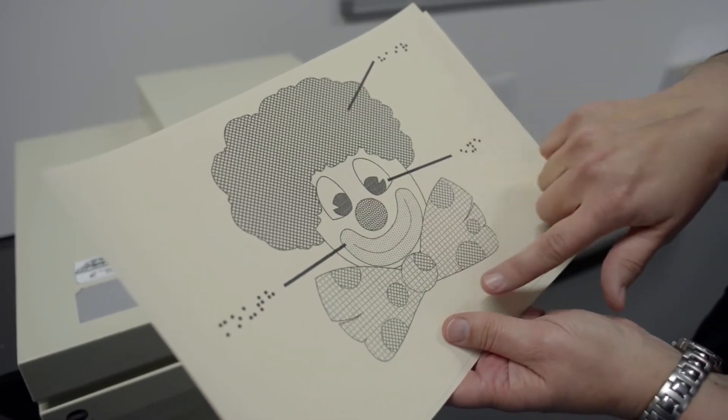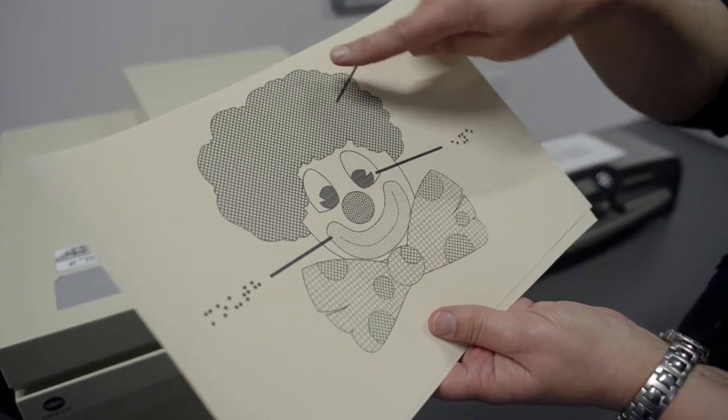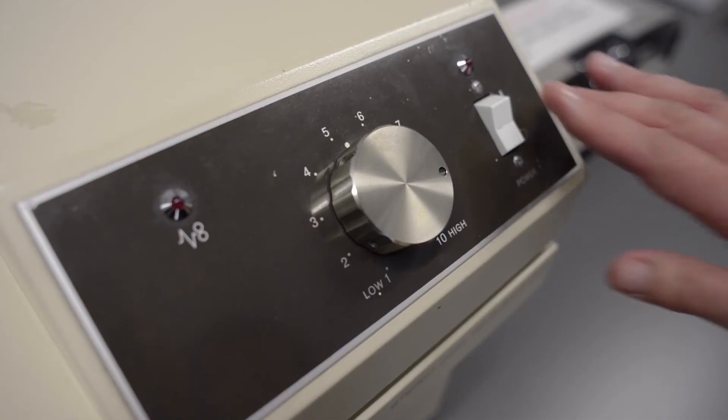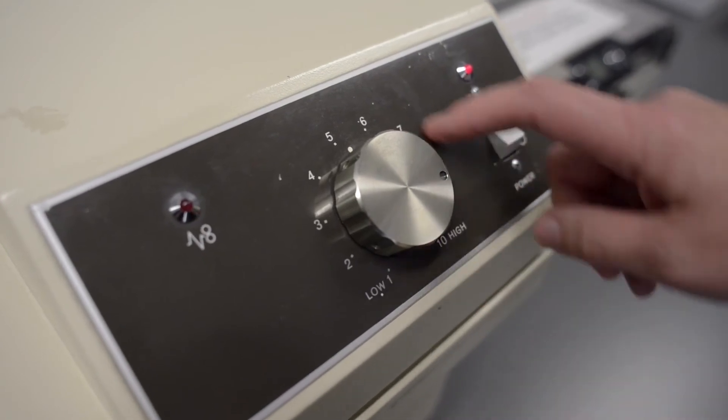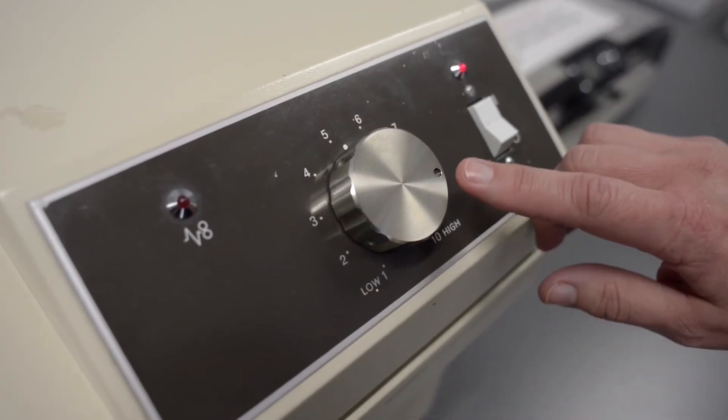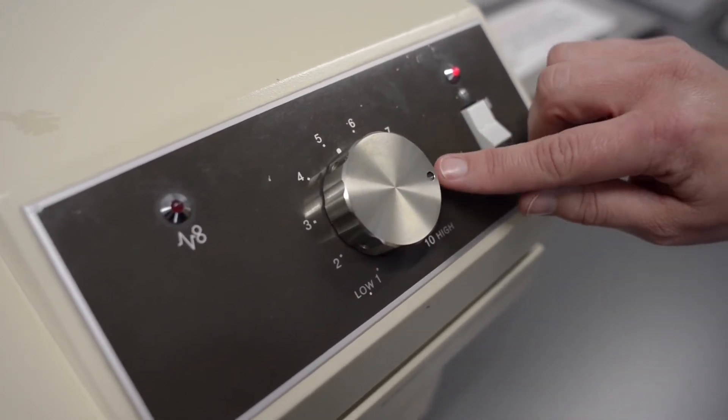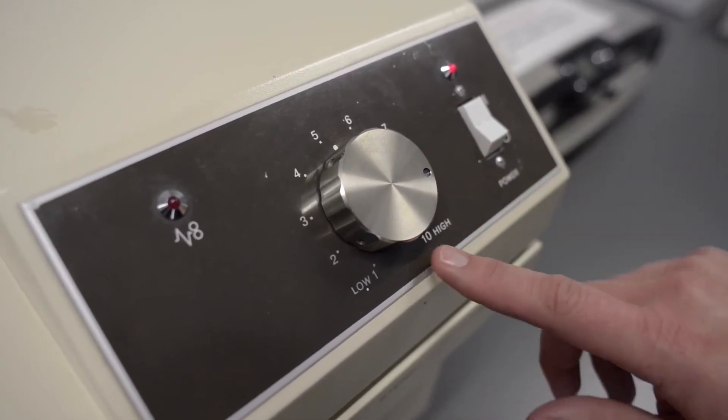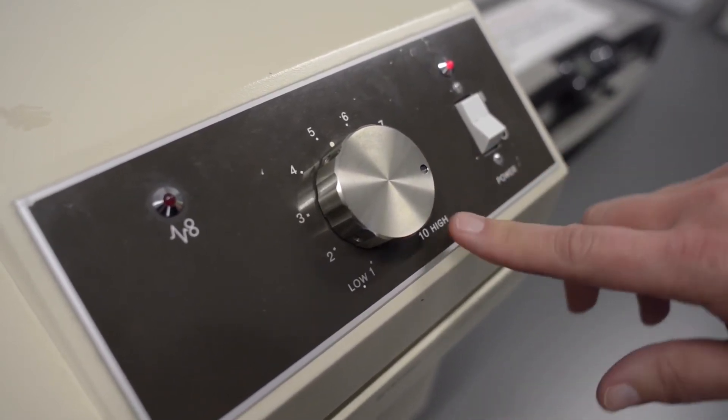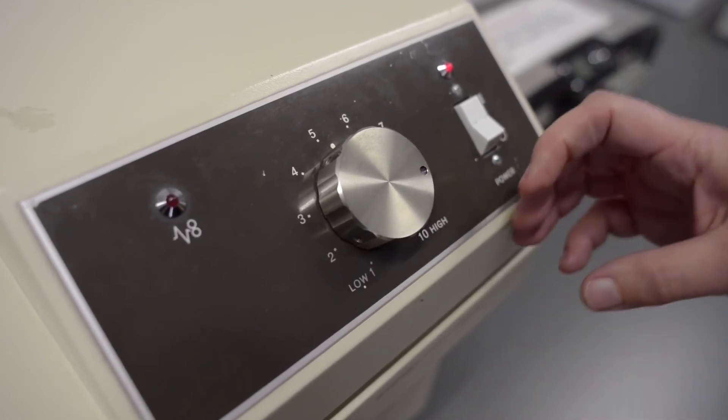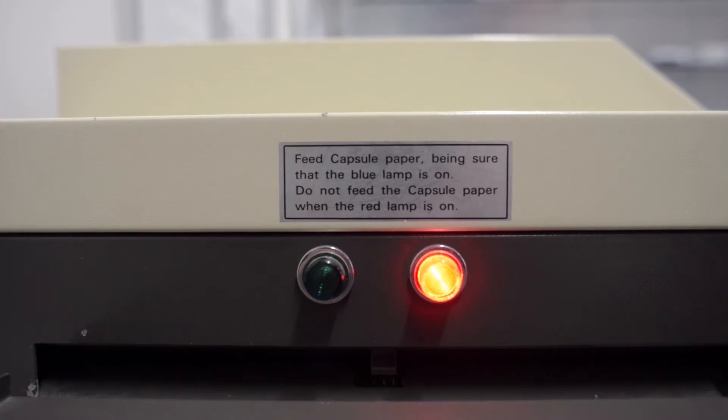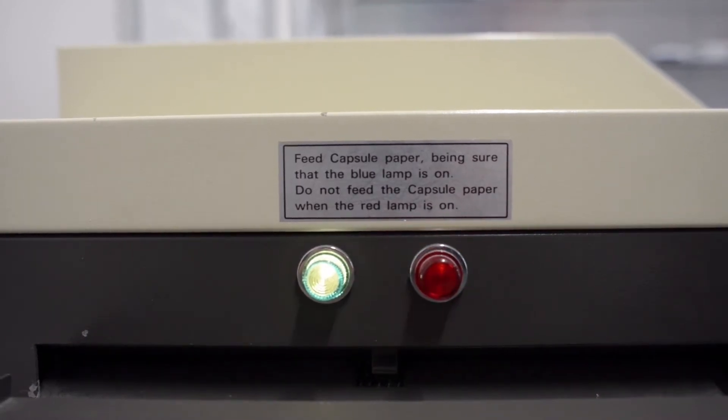I've just collected the diagram from the printer and as you can see as yet it's not raised at all. So if I turn the machine on making sure that the heat setting is not too high and not too low, I personally have it around 8.5. Having it too high will make the swell paper over bubble particularly if the carbon content is quite great at a particular point. As soon as the green light's on you know that the machine is ready.